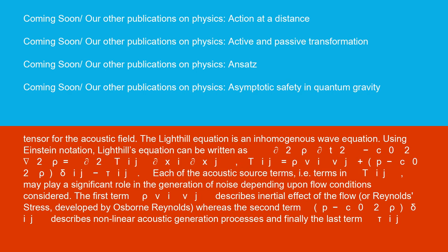The Lighthill equation is an inhomogeneous wave equation. Using Einstein notation, Lighthill's equation can be written as ∂²ρ/∂t² - c₀²∇²ρ = ∂²Tᵢⱼ/∂xᵢ∂xⱼ, where Tᵢⱼ = ρvᵢvⱼ + (p - c₀²ρ)δᵢⱼ - τᵢⱼ.